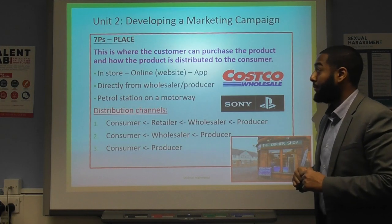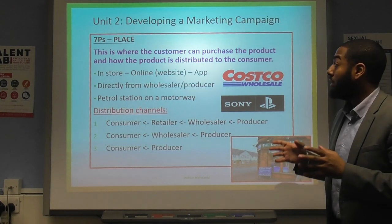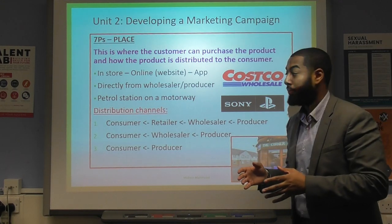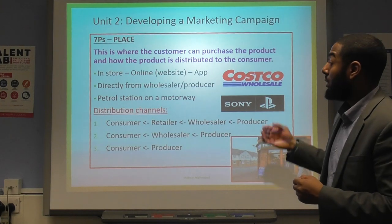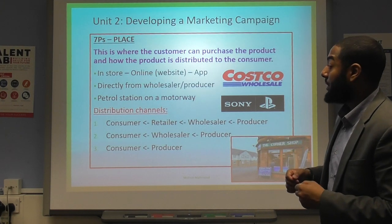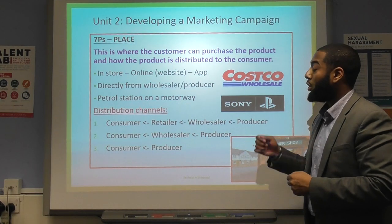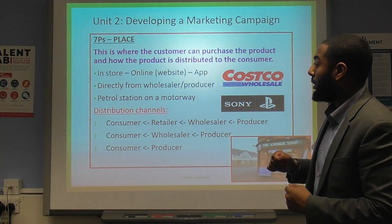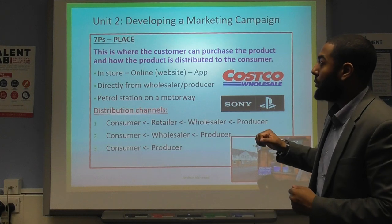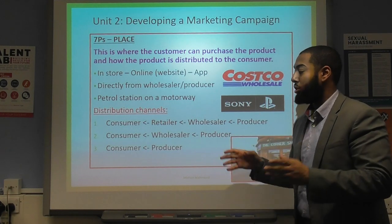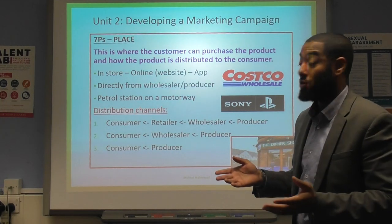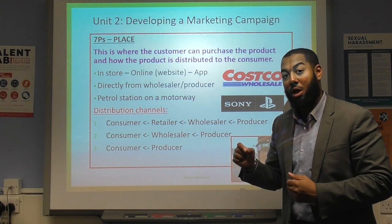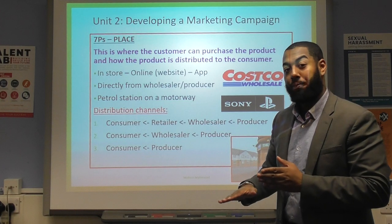Now we're looking at place — where the customer can purchase the product and how the product is distributed to the consumer. This can be in-store, online via a website or app, or directly from the wholesaler or producer. For example, petrol stations — the best place for a petrol station is arguably on a motorway, because it has high inelastic demand.